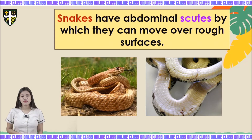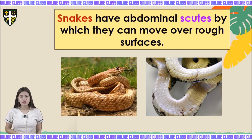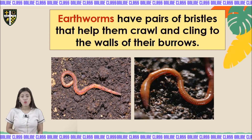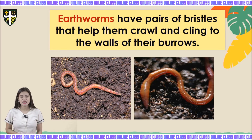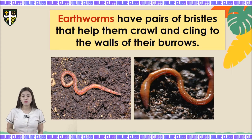Snakes have abdominal scutes by which they can move over rough surfaces. Earthworms have pairs of bristles that help them crawl and cling to the walls of their burrows.